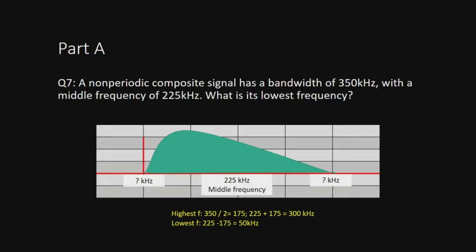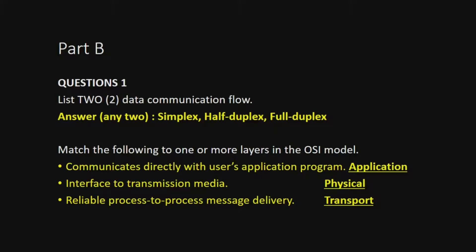That's how you calculate the lowest and highest frequency when bandwidth and middle frequency are given. Next, Part B. Question 1 asks you to list two data communication flows. We have three: simplex, half duplex, and full duplex. Since the question is only 2 marks, just list the answers without explanation.